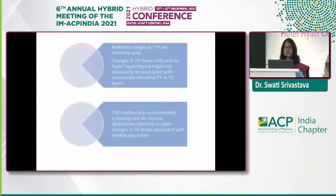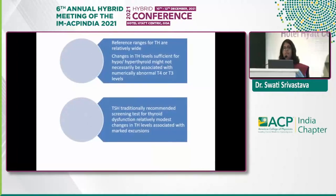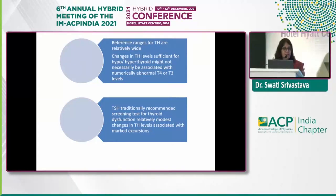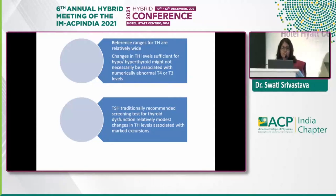The reference ranges of T3 and T4 are relatively quite wide. A minor change in thyroid hormone level may be sufficient to render a person hyperthyroid or hypothyroid, but numerically it will still remain within the normal reference range. That is why we are not able to diagnose subclinical or mild disease on the basis of T3 and T4 alone. However, even a modest change in thyroid hormone is associated with marked excursions of TSH. That is why TSH is traditionally recommended as a screening test for thyroid dysfunction.